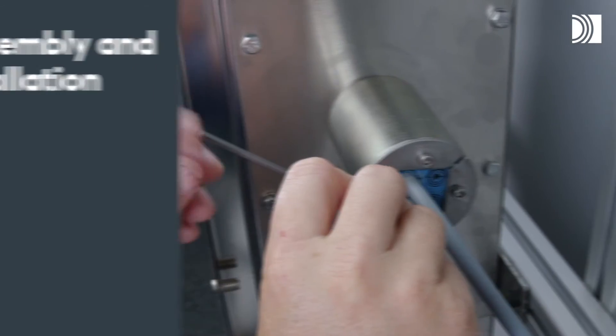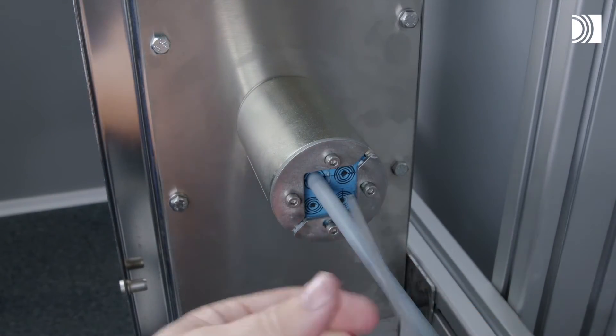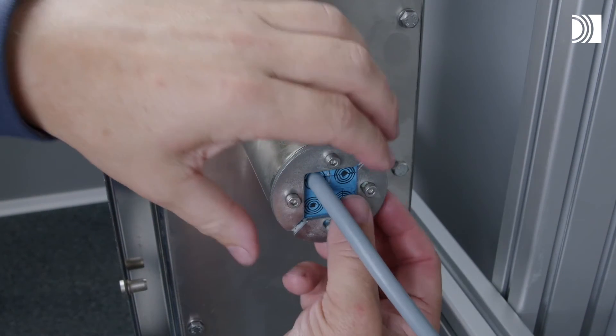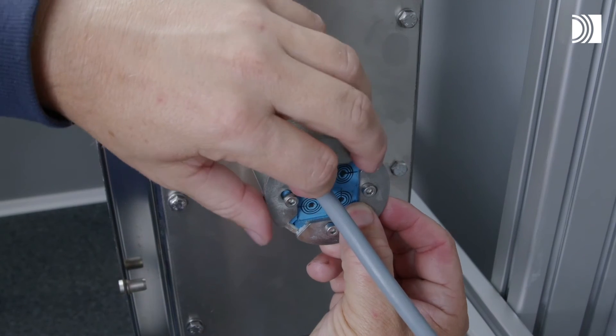Disassembly and reinstallation. Untighten the nuts crosswise in small steps. Make sure the nuts are completely loose. Push the front fittings to the sides.